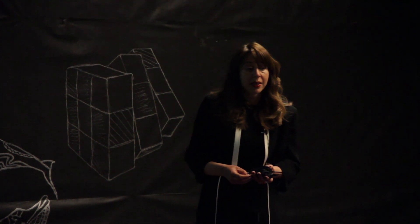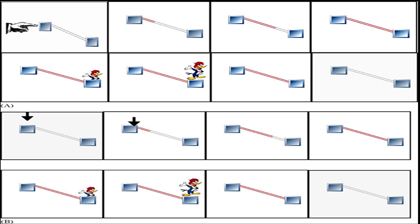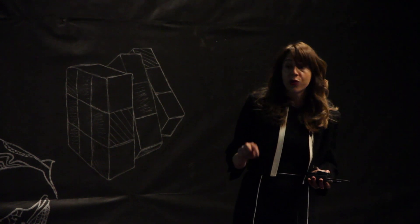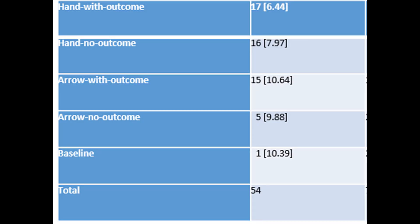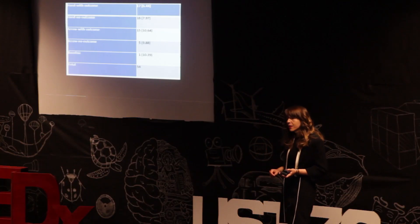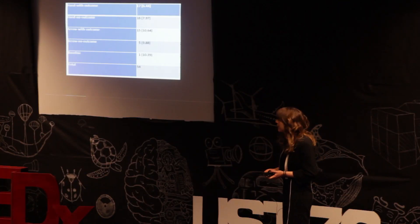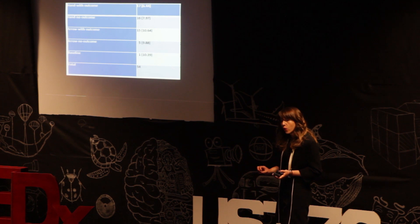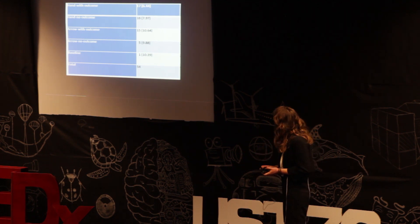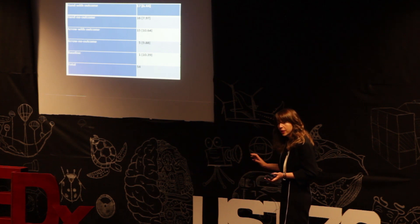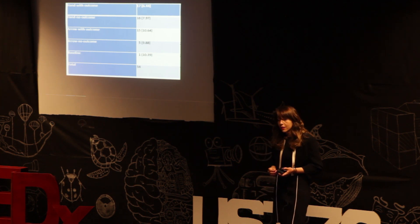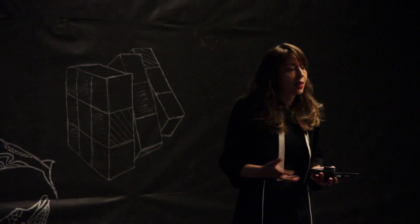Going back to my experiment, when I pressed the button and Woody Woodpecker came out, the frequency was really high — that's hand with outcome. When I pressed the button and there was no outcome, frequency was extremely high as well. When there was an arrow with no salient effect — emulation — frequency was really low; we didn't get any results there. When there was an arrow and the salient effect, kids repeated that over and over again.